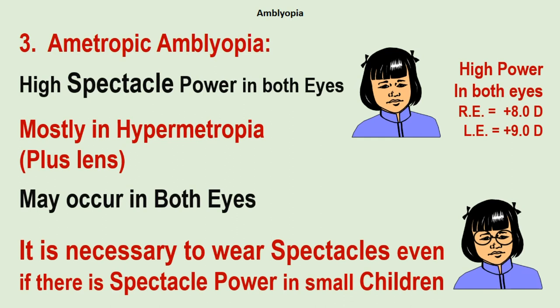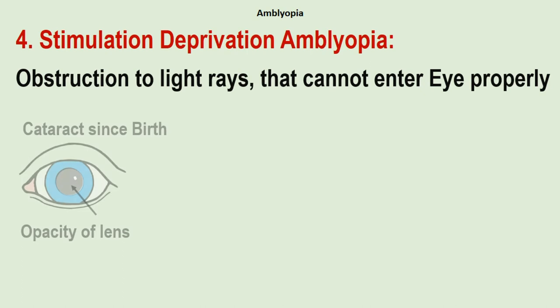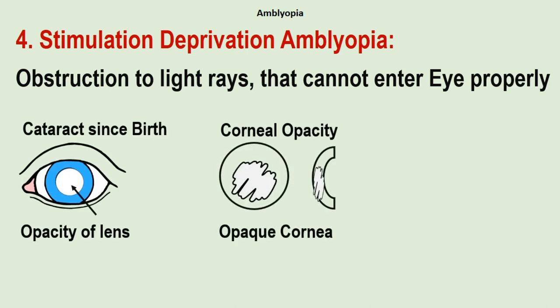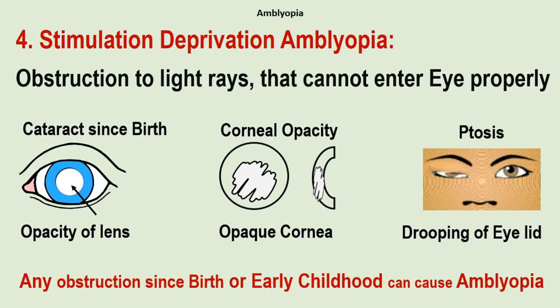Stimulation deprivation amblyopia occurs because of obstruction to light rays that cannot enter the eye properly. Examples include congenital cataract or lens opacity since birth, corneal opacity due to any cause, or ptosis — drooping of the eyelid — obstructing vision. Any obstruction since birth or early childhood can cause amblyopia.